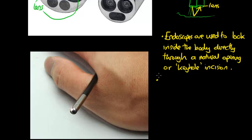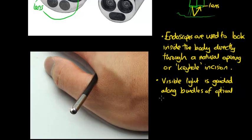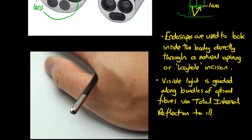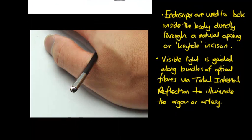How does it work? Visible light is guided along bundles of optical fibers via total internal reflection to illuminate the area, the organ or even artery.